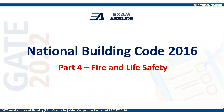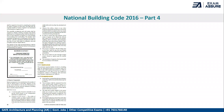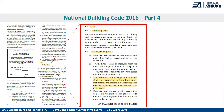Another important part of the National Building Code is fire and life safety, which is Part 4. One important topic is the number and arrangement of exits. A key point is that the dead-end corridor length to an exit shall not exceed 6 meters for educational, institutional, and assembly occupancies, while for other occupancies the same shall be 15 meters.